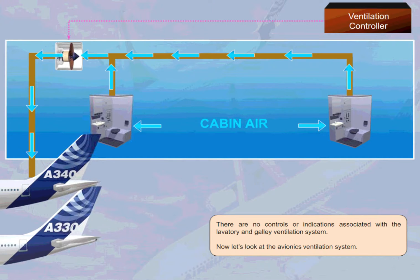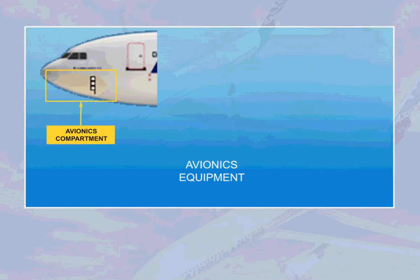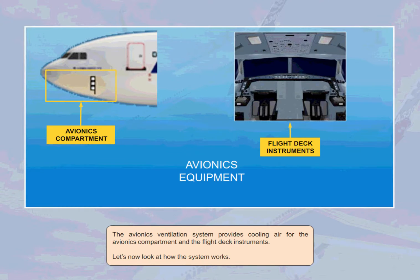Now let's look at the avionics ventilation system. The avionics ventilation system provides cooling air for the avionics compartment and the flight deck instruments. Let's now look at how the system works.